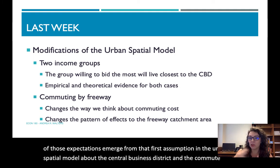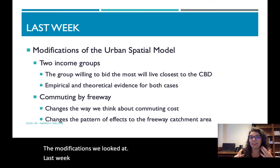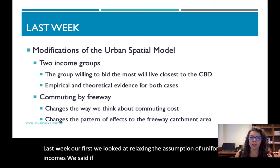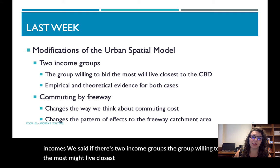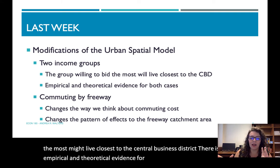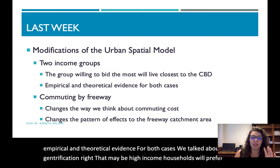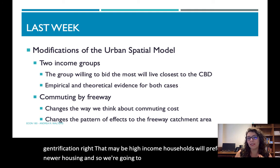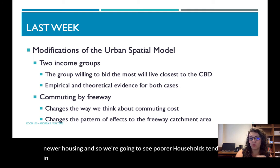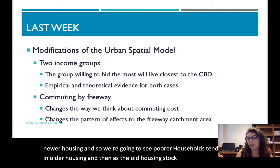The modifications we looked at last week: first, we relaxed the assumption of uniform income. If there are two income groups, the group willing to bid the most might live closest to the central business district. There's empirical and theoretical evidence for both cases. We talked about gentrification — maybe high-income households prefer newer housing, so we see poor households tend to live in older housing, and as the old housing stock is replaced, rich households move in.